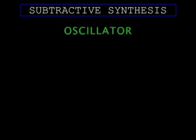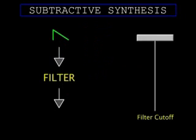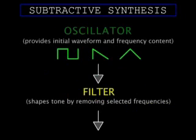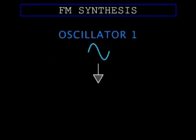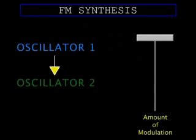Most keyboards implement subtractive synthesis. Oscillators have multiple waveforms, each one with different harmonic content, and you change tone with filters that subtract a portion of those frequencies. FM doesn't need a filter to edit tone. Modulation between simple oscillators builds complex frequencies from the ground up. Instead of controlling tone with filters, you can control tone with modulation.